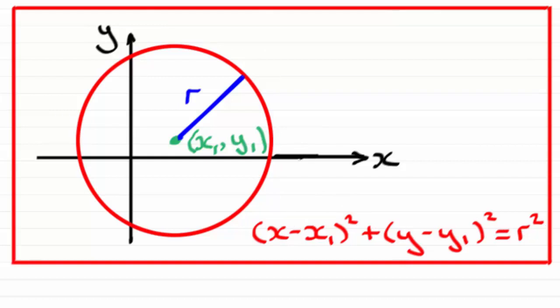Now, if we're out to find the equation of a tangent at a point on the circle with coordinates, say, a and b, then remember, this line would be perpendicular to the radius at that point. Let's just mark that in.